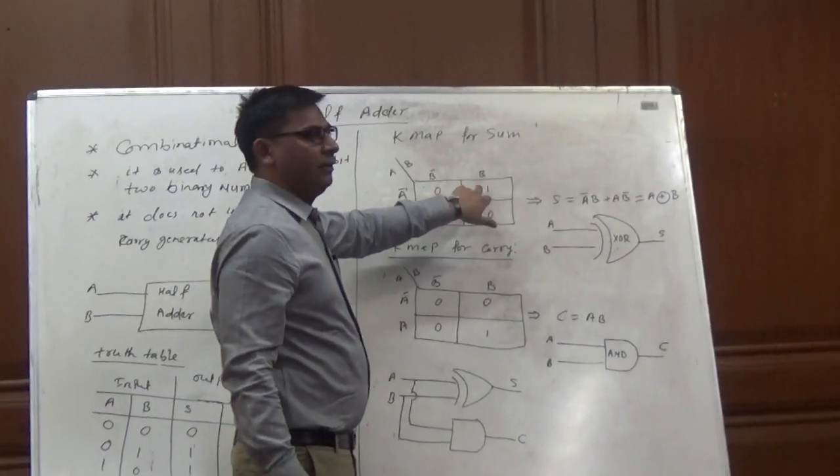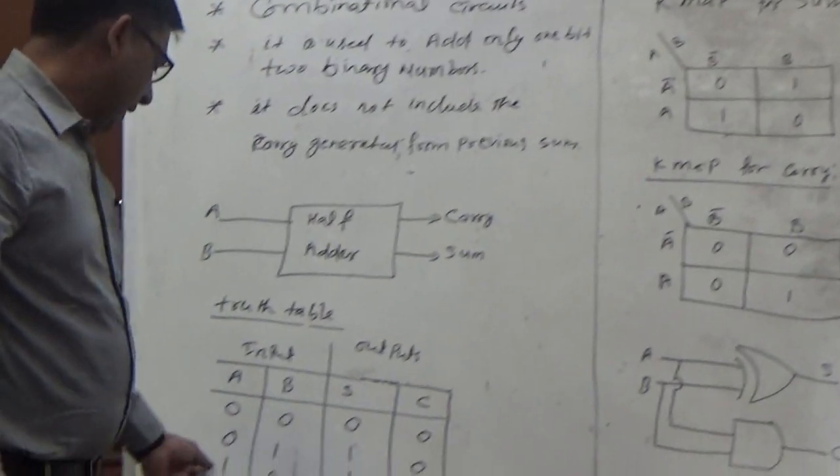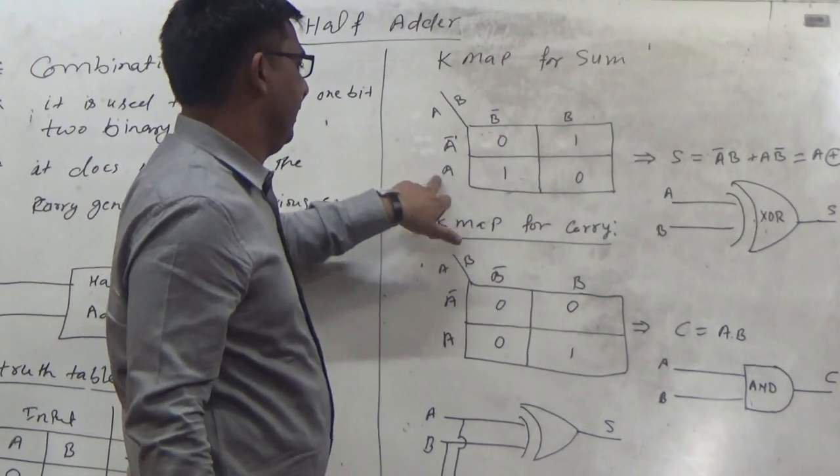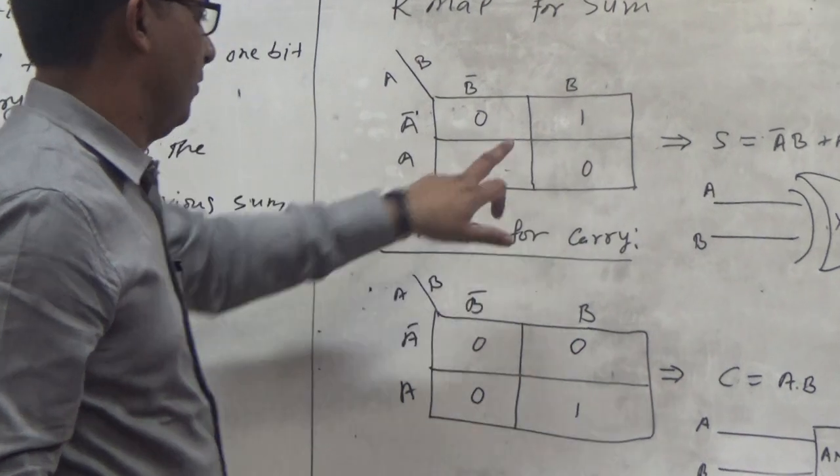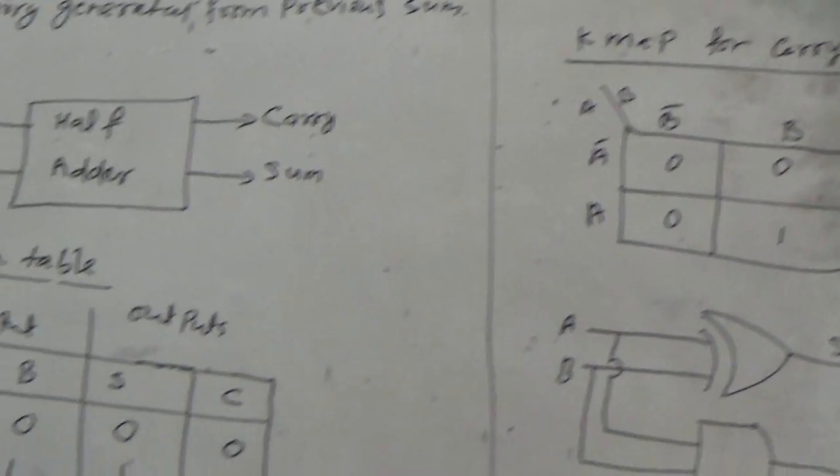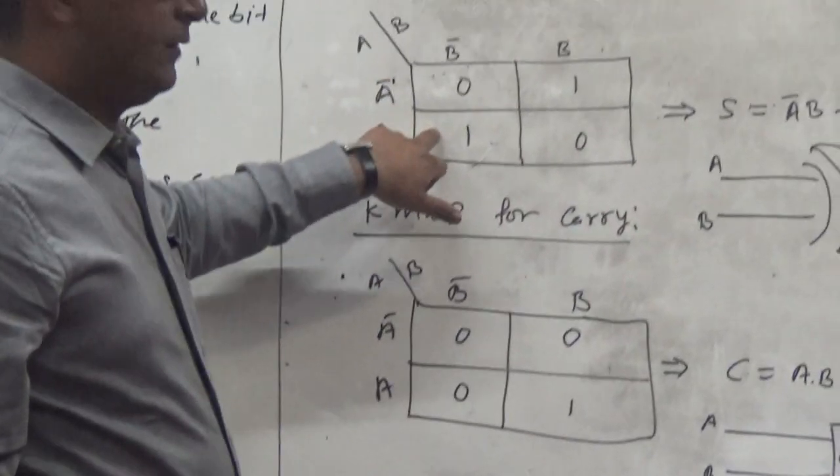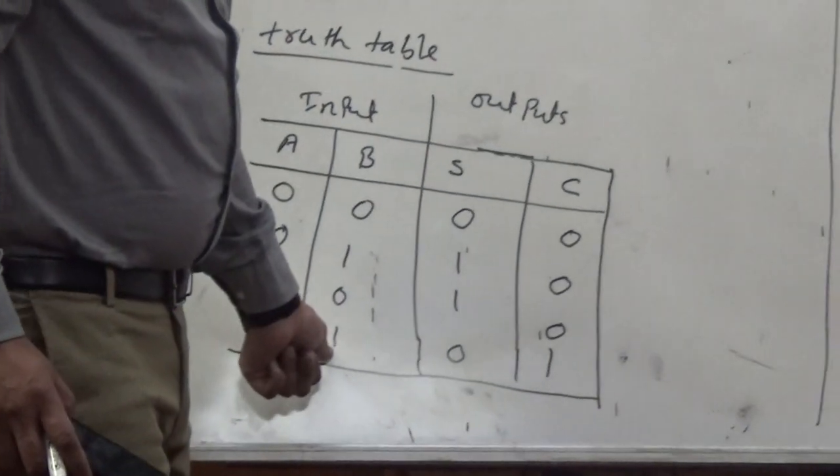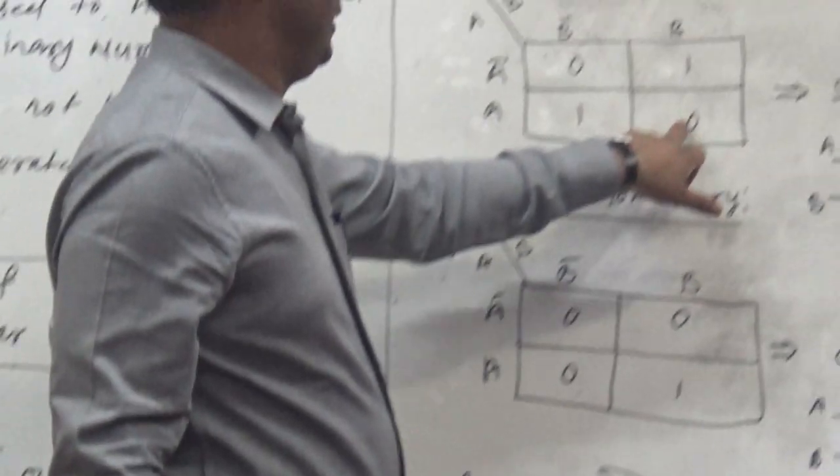Next one is A is high and B is low. A is high and B is complement, B is low, and the value of this combination for sum is 1, so I feed 1 here. The next one is A is high and B is high, then the sum is 0, so I feed it here.